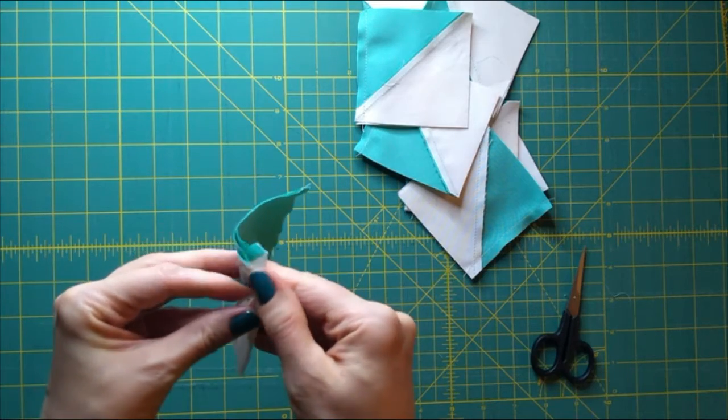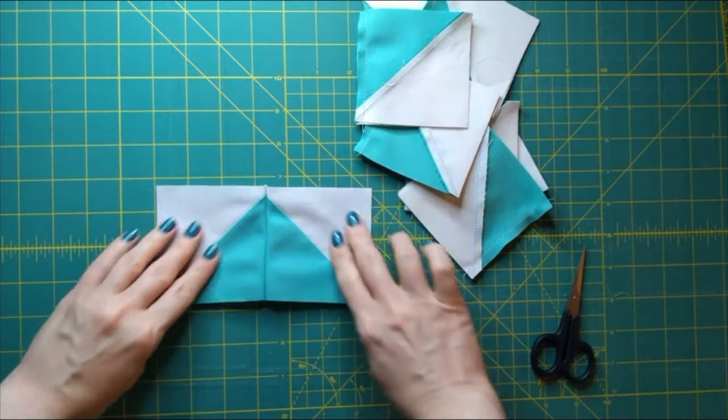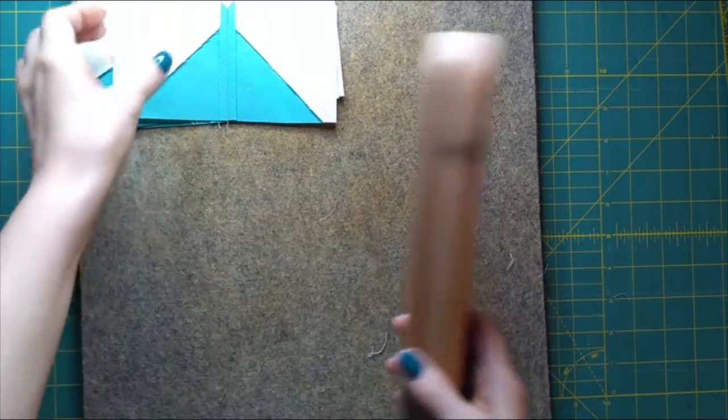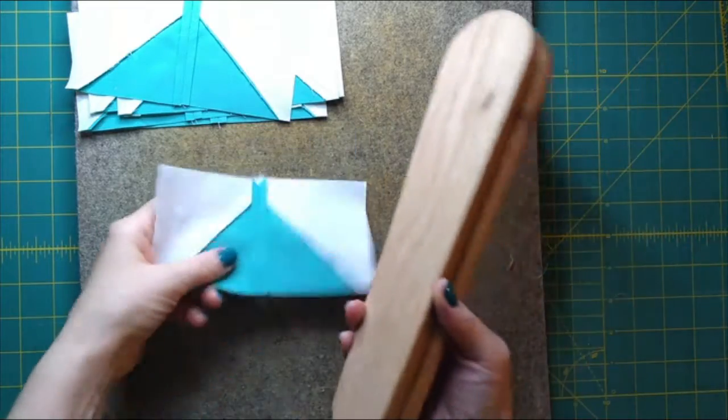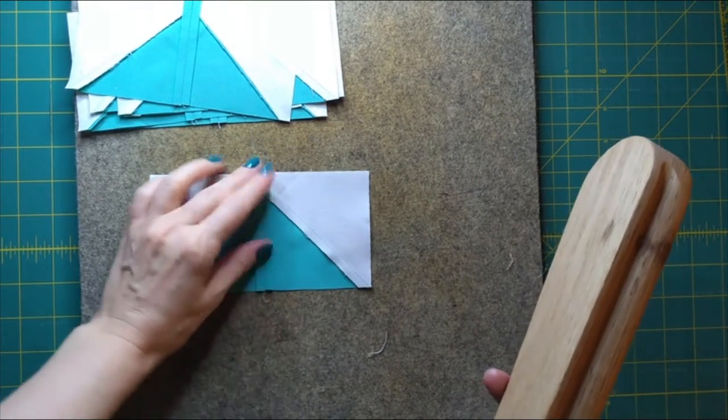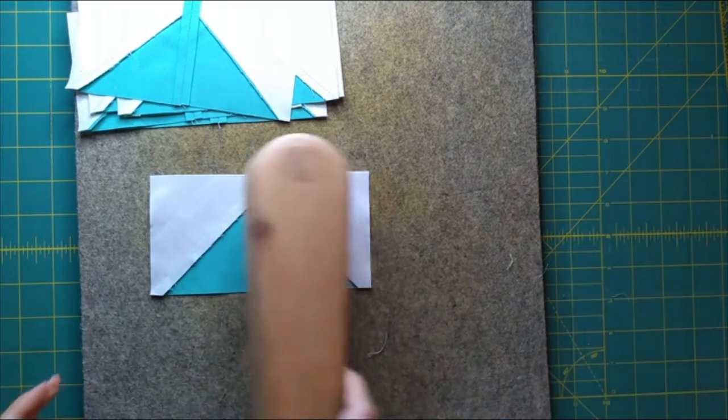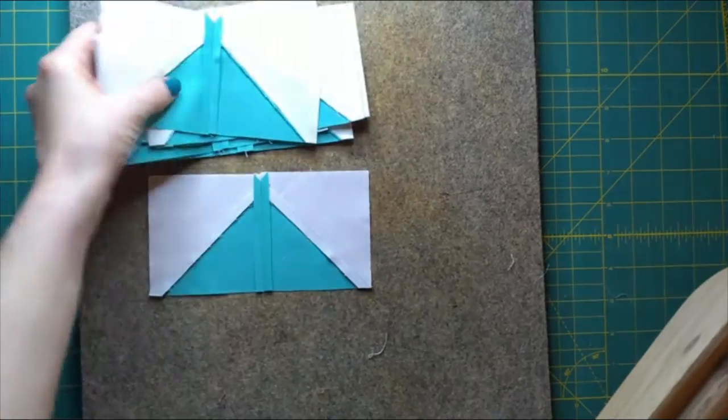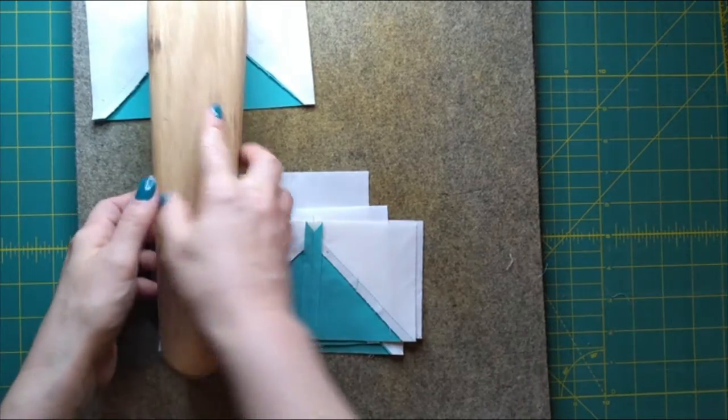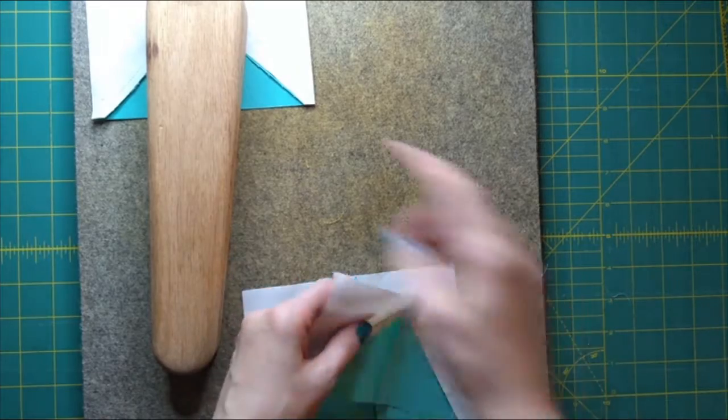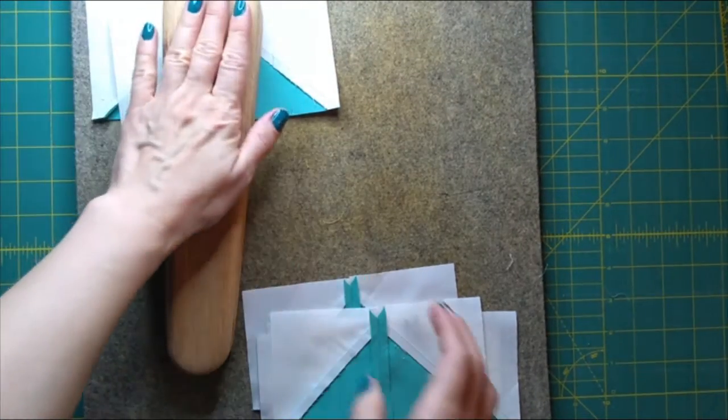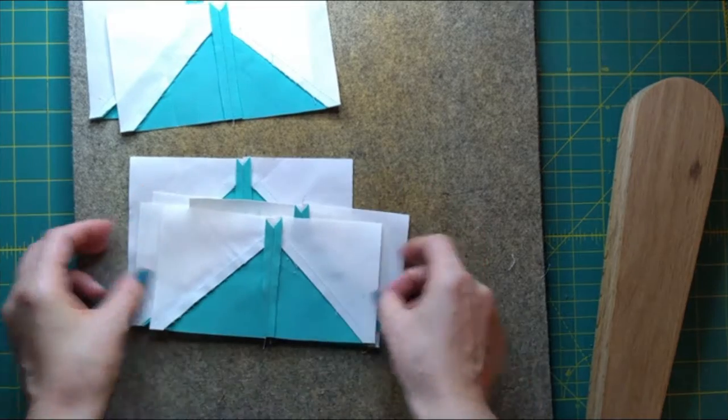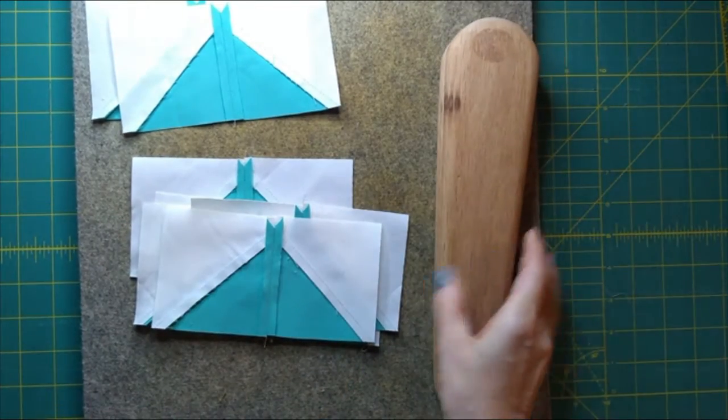And then we will press them open and it will be a flying geese unit. As I mentioned last week, this tailor's clapper is one of my favorite tools along with this wool pressing mat. I press these seams open and then I hold the iron on it for a bit, maybe five seconds, maybe ten, and then I put the tailor's clapper on top to hold it. And I actually build up a whole stack of these. I'll iron and press one, put it on the stack, put the tailor's clapper, and then while I'm pressing the next one I just leave it there and then I keep adding to the pile and putting the tailor's clapper on every time so it just holds all of them down. So they all end up nice and flat like this. I'll put a link in the description below to these items.